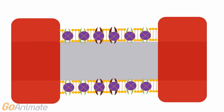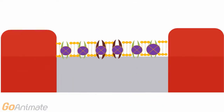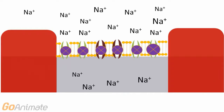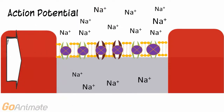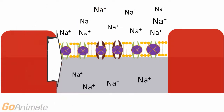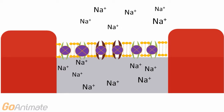Here's how it works. We will begin with all of the channels closed. There is a large sodium gradient with more sodium outside of the cell than in. When an action potential propagates down the axon, it reaches a node. The sodium gates open in response to the action potential, and sodium rushes into the axon by moving down its gradient. This causes the area to depolarize. The sodium gates then close.